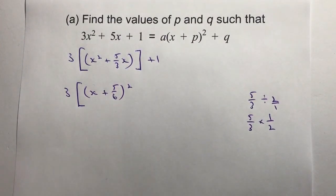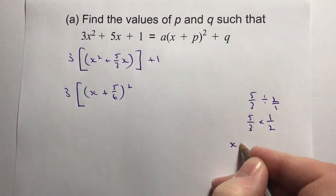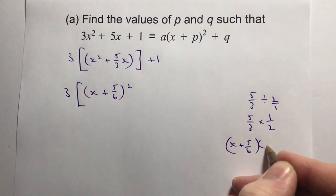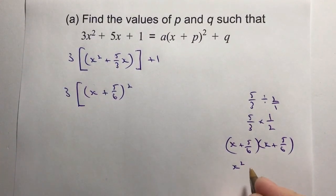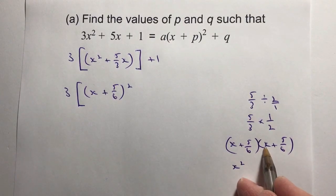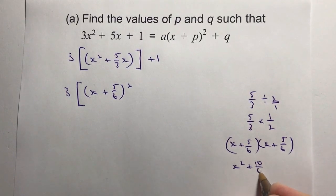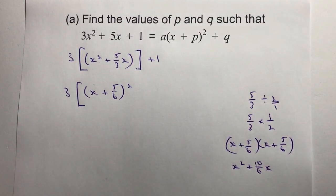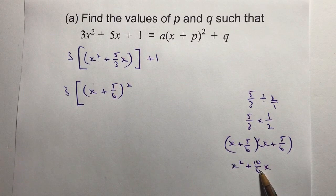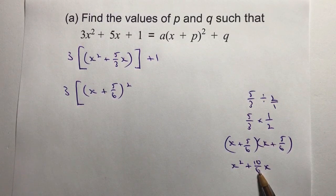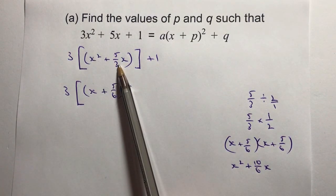Let's have a look at multiplying that out to see what it actually looks like. I'm going to write x plus 5 over 6 times x plus 5 over 6. Well, x times x is fine, and then I've got 5 over 6 plus 5 over 6, which gives me 10 over 6 x. Now 10 over 6 x is exactly the same as 5 over 3, because if I divide top and bottom by 2, I get 5 over 3. And what we're trying to do is recreate those first two terms.